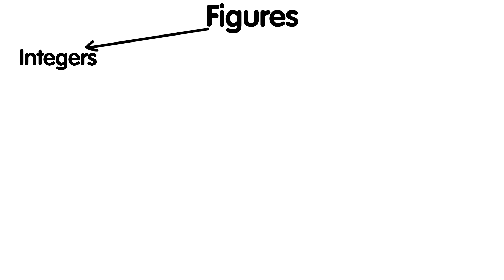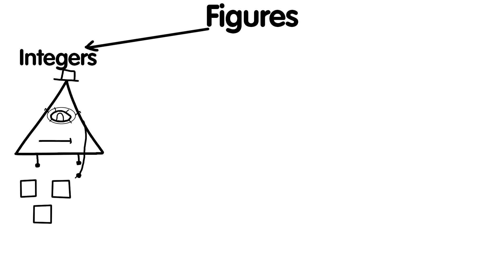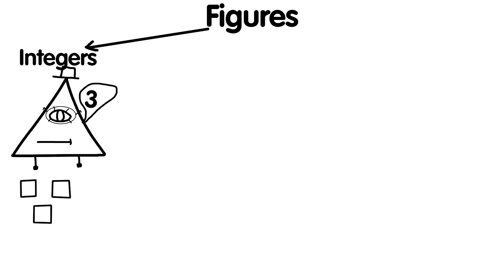Numbers and numerals. Numbers are mathematical objects that are used to measure and count. Numerals are symbols that represent numbers. Our decimal number system uses only 10 digits: 0, 1, 2, 3, 4, 5, 6, 7, 8 and 9.